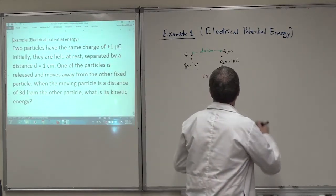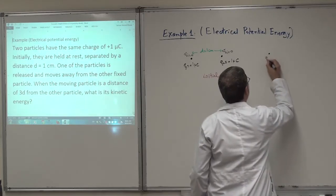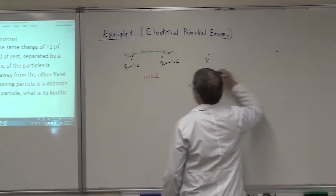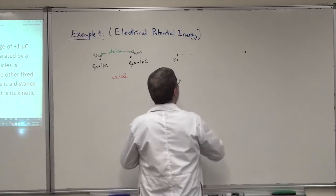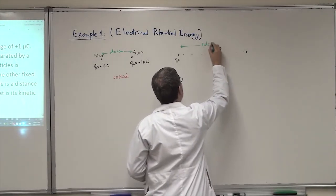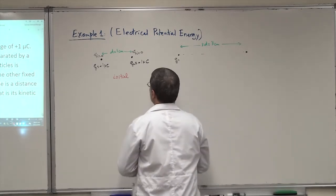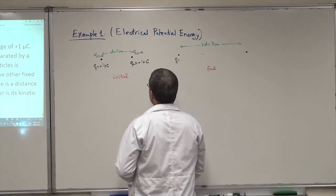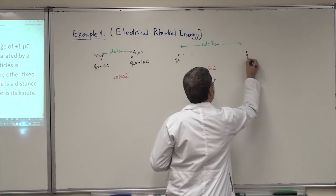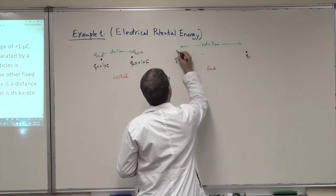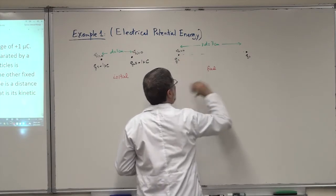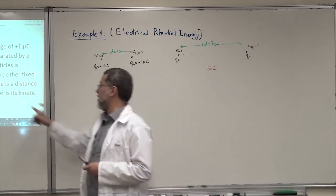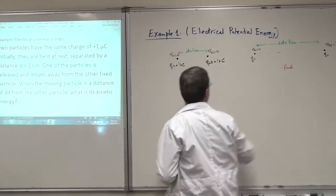That's the initial configuration. In the final configuration, Q1 remains fixed, but Q2 will be at a distance 3D, which is three centimeters. Q2 has V2 initial equal zero because it was fixed, and there will be a V2 final. We want the kinetic energy of particle Q2.